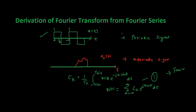Now Fourier series is used to represent a periodic signal. But in real life we don't have periodic signals - we see only aperiodic signals. Whatever we speak is an aperiodic signal. So how do you represent such signals which we use in day to day life? That was the question which Fourier asked himself. It took him around 20 years to come up with Fourier transform, and the way he came up with it is very interesting.